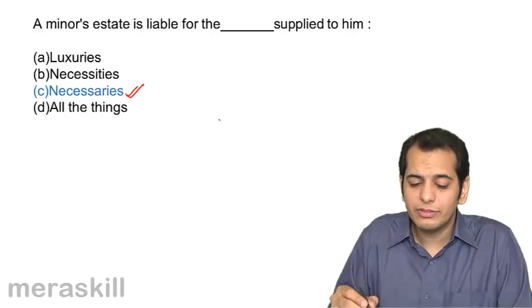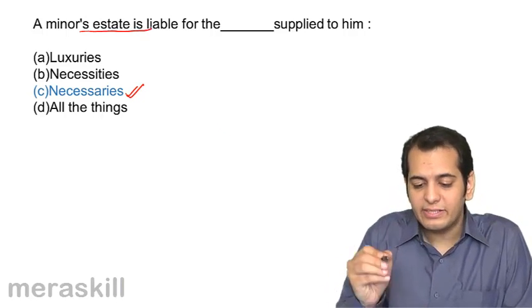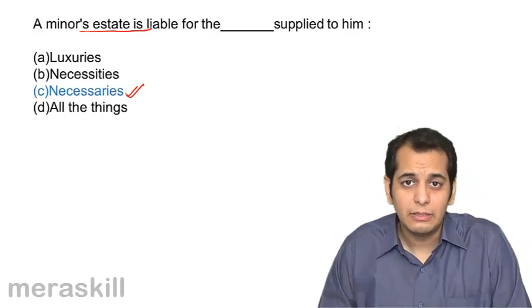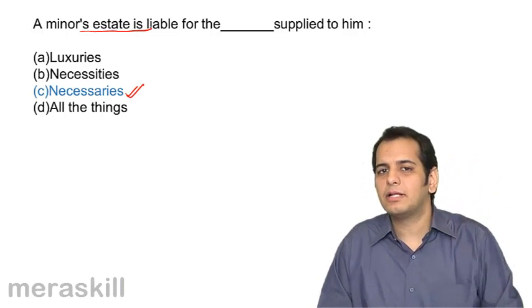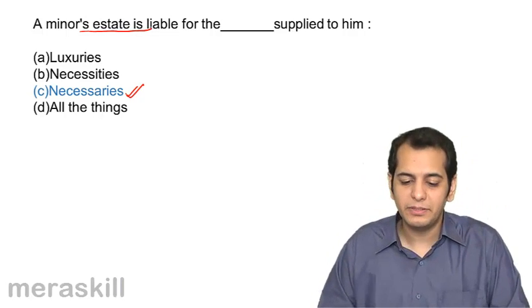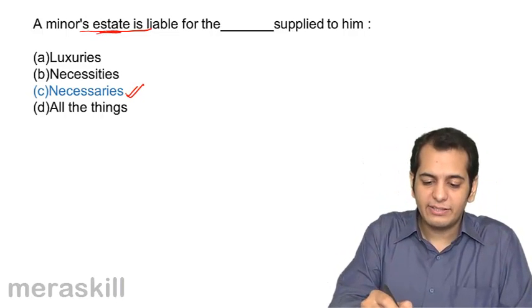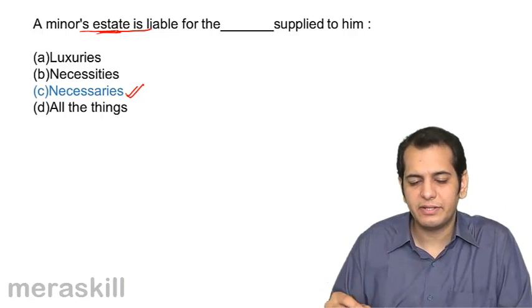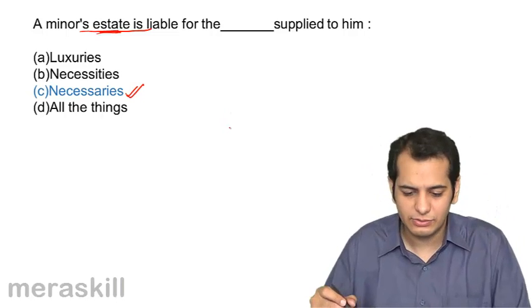The other important thing is: Minor's estate only will always be liable — the minor himself will never be liable. So please note that Minor's estate is liable; estate means property or assets. The minor personally is never liable.